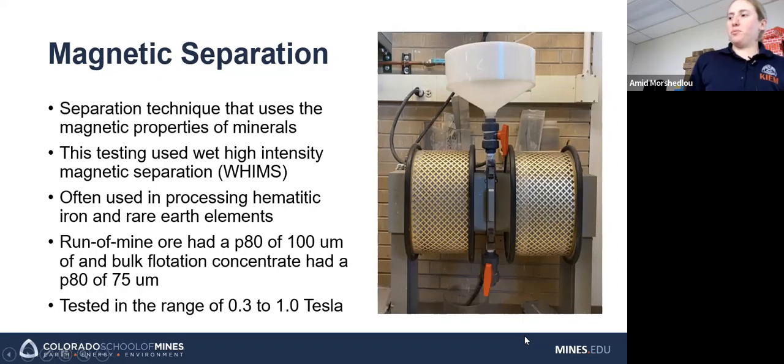And then you pour your slurry in the funnel at the top while you have a magnetic field running through it. The magnetic particles or the particles you have that would respond to a magnetic field stay within the matrix while your non-magnetic go through the bottom, and then you can rinse out the magnetic material once you turn the machine off.